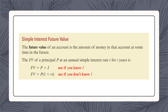Let's move on to our next formula: future value when dealing with simple interest. The future value of an account is the amount of money in that account at some time in the future. The future value FV of a principal P at a simple interest rate R for T years has two versions. FV equals P plus I — use this if you already know what I is, which we did in the first example. The second version, used most often, is FV equals P times (1 plus R times T) — use this if you don't know what I is.